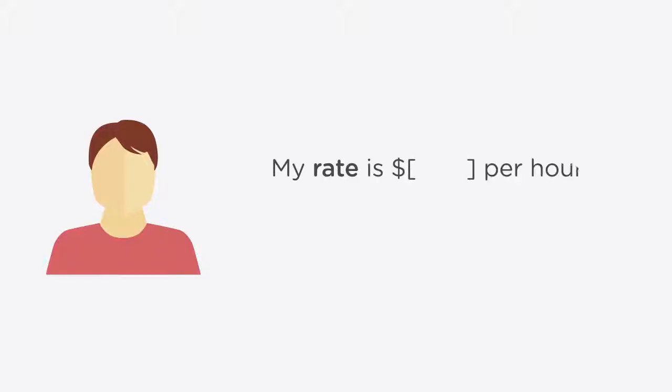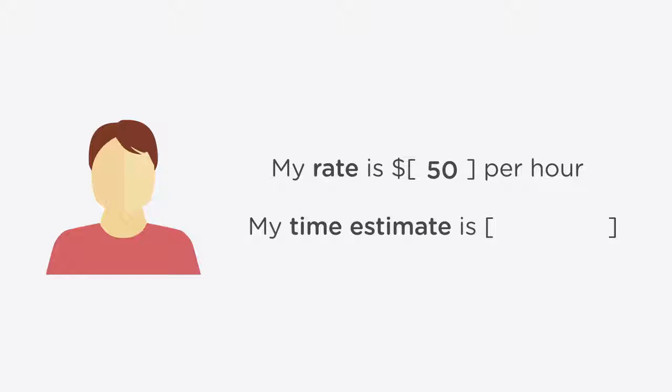If you want to charge by the hour, you take an hourly rate and multiply it by the amount of time you think it will take to complete the project. If a project isn't completed in the initially established time frame, it's easier to revise an estimate of the final costs. You can also do this if the client changes the project or requests extra revisions or features. However, you need to know two important pieces of information: your hourly rate and how long the project will take.